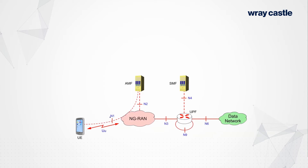We've already mentioned the N1 interface, which is the non-access stratum signaling interface. There is an N2 interface which terminates at the gNodeB — that's the NGC interface. There is a user plane GTP-based interface called N3, which connects the base station to the user plane function. The N6 interface connects to the external data network and is roughly equivalent to the SGi interface from previous generations of network.